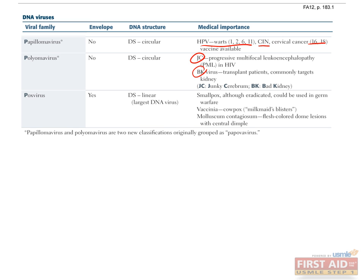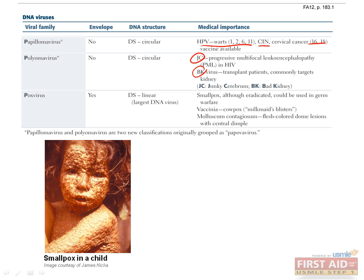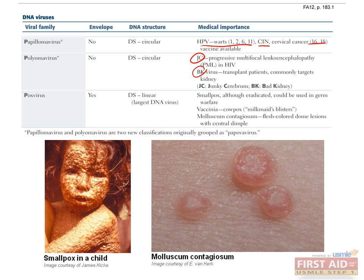Poxvirus is the largest human virus and replicates in the cytoplasm. Poxvirus was responsible for smallpox, a once devastating infection causing maculopapular skin lesions that later became raised fluid-filled blisters, responsible for approximately 500 million deaths during the 20th century. However, thanks to the success of vaccination programs, smallpox was entirely eradicated from the human population in 1977. Today, poxvirus can be seen as the cause of molluscum contagiosum, a self-limited infection that causes flesh-colored papules on the skin, transmitted by close contact, with a key feature of central dimple or umbilication of the papules.